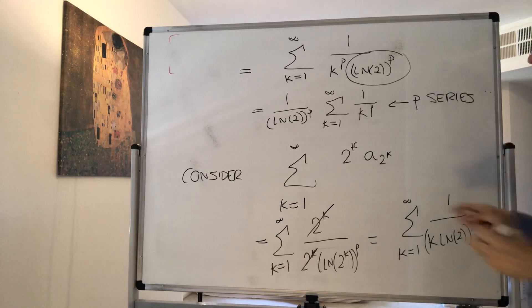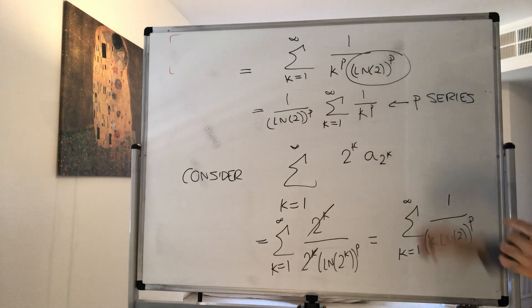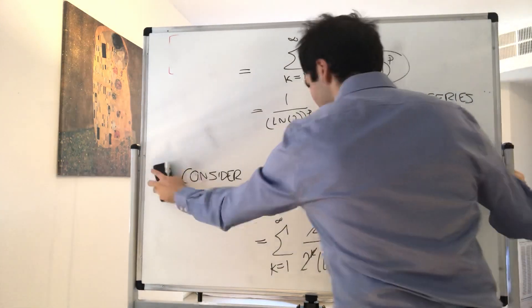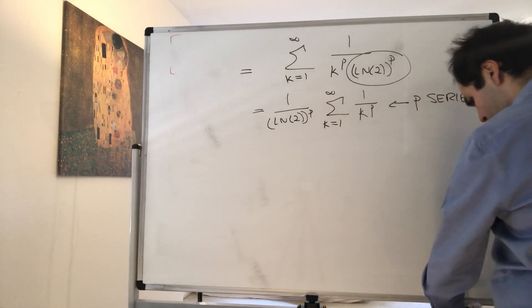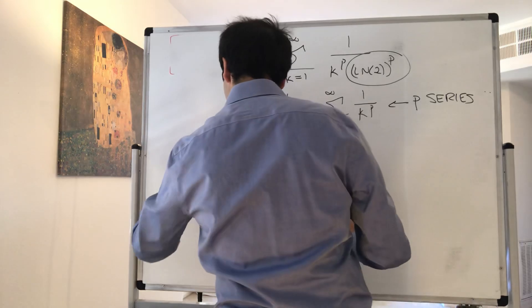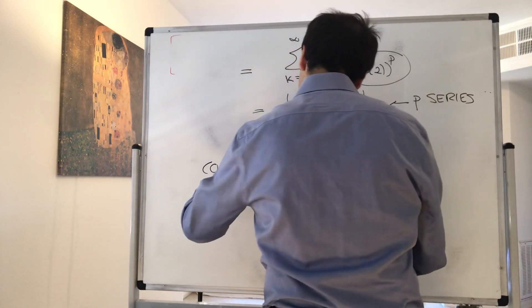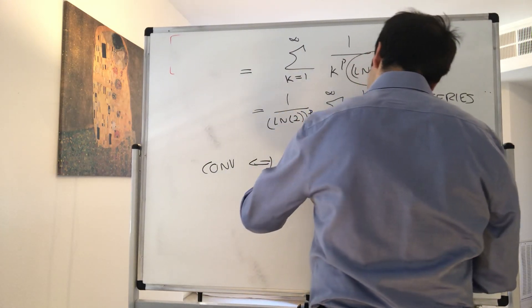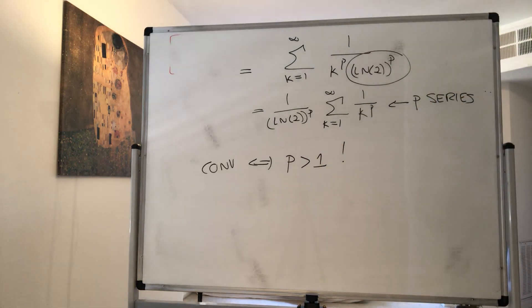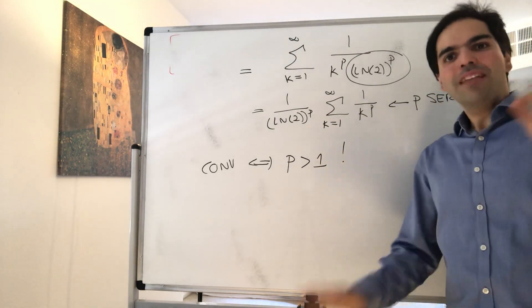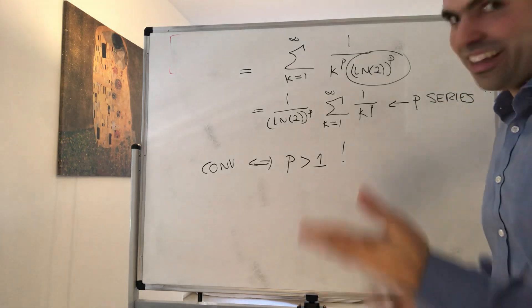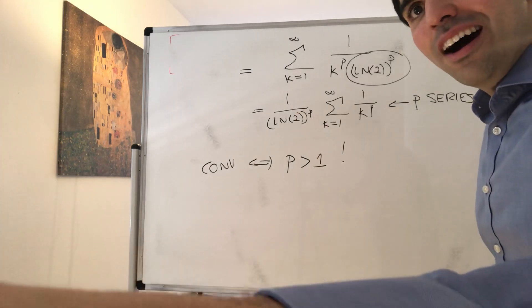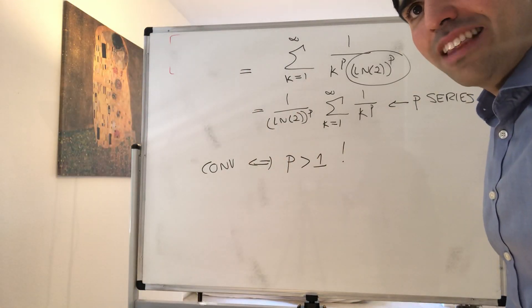So, the block test transforms the original series into a p-series, and this converges if and only if p is greater than 1. How cool is that? And in the next video, I will give you more examples of that block test. Again, just to notice how elegant this is. Thank you very much.